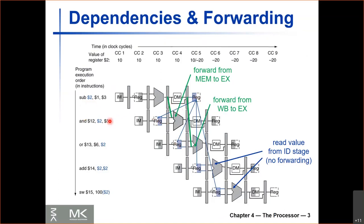In the case of the AND instruction, we forwarded from the beginning of the execute stage to the beginning of the data memory stage of SUB to the beginning of the execute stage for AND. For the OR instruction, we forwarded from the write back stage for SUB to the beginning of the execute stage for OR. Whereas for ADD and STORE, these instructions were sufficiently far enough that we can write the register to the register file and then read it on the same cycle for ADD or on the next cycle for STORE.